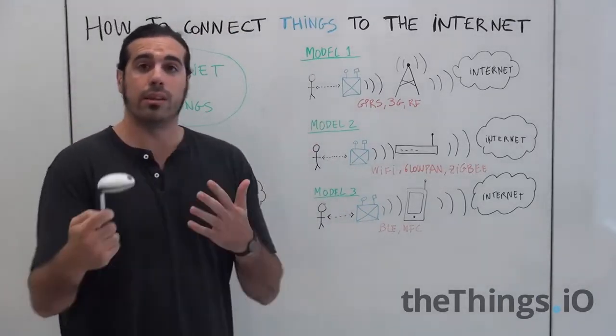The first model is to connect this thing directly to the internet using for example a SIM card with GPRS or 3G or 4G or radio frequency with a radio frequency chip that actually this thing is talking to an antenna somewhere that's directly connected to the internet.